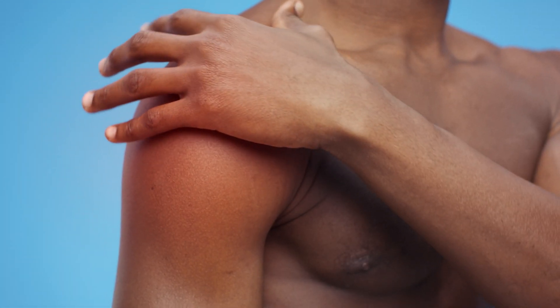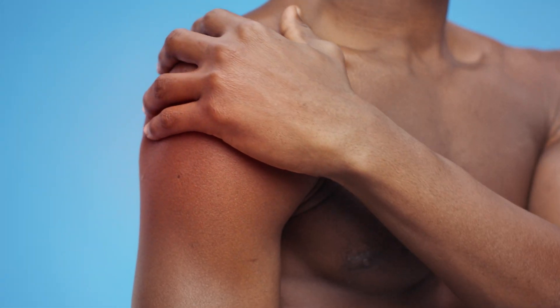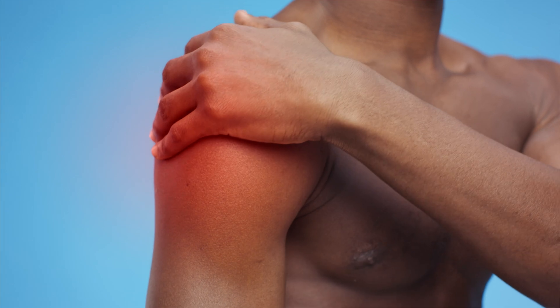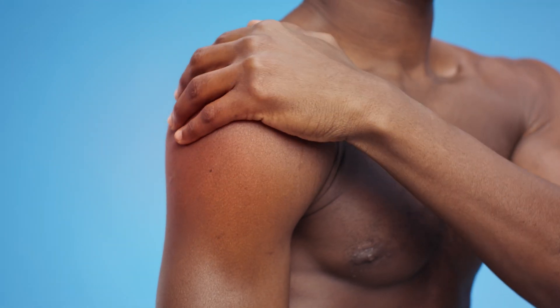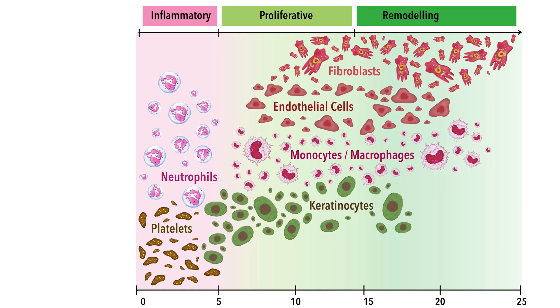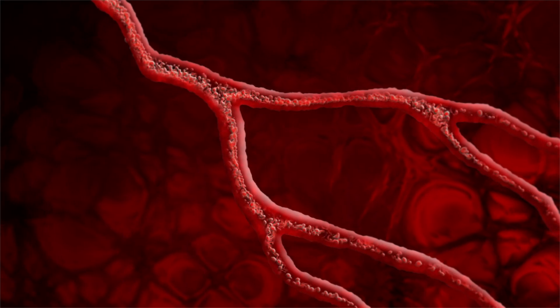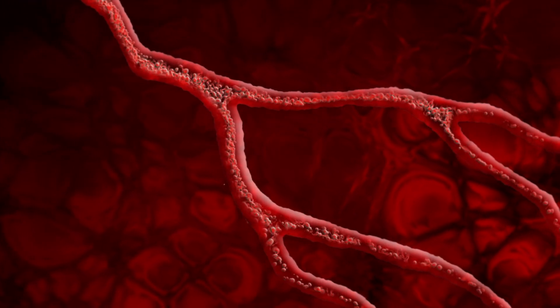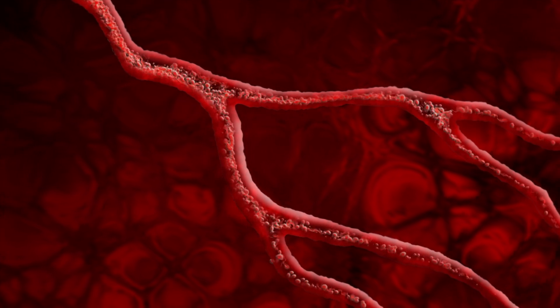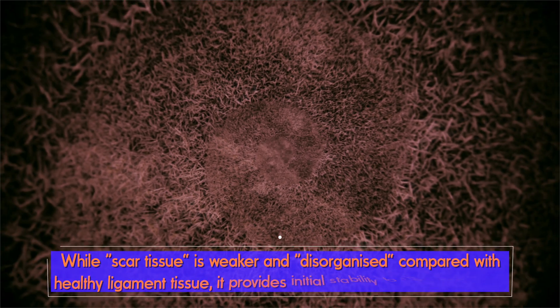This leads to certain cardinal signs which you're probably already familiar with — things like pain, redness, heat, and swelling. The proliferative phase follows, and this involves the formation of new blood vessels and the production of collagen and other extracellular matrix components. This results in the formation of what's known as scar tissue, which, although it's weaker and disorganized in its alignment compared to the original ligament tissue, it still provides initial stability to the injured joint.